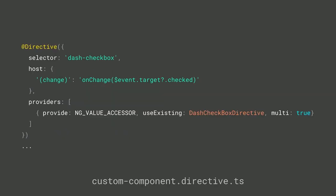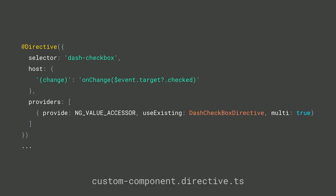For the dash-checkbox, we might want to build a completely custom value accessor, which lets us interact with any arbitrary API from a web component we don't control. I'll wire it up in Angular using a directive. The selector is dash-checkbox. I add a host event listener on 'change' looking at the checked property of the changed object. I let Angular forms know we have a value accessor by using a provider pointing to this dash-checkbox directive, then define the directive with an onChange function, constructor for element and renderer access, a method to write the property, and registration for change and touch events.